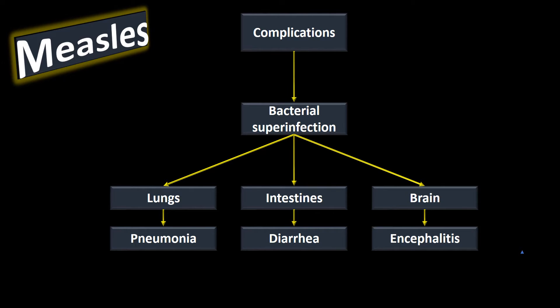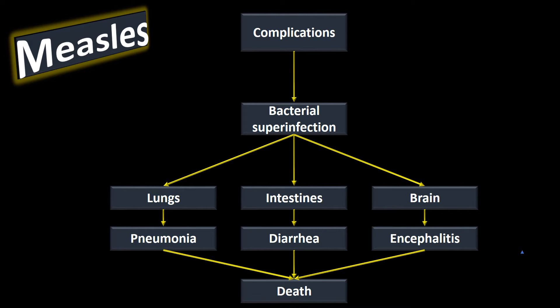These complications can all lead to death. In the 1990s the death rate was about two to three per 1,000 cases, mainly in children under five. In developing countries, the case fatality rate can be three to five percent, and sometimes as high as ten to thirty percent, especially without medical resources for supportive therapy. The main causes of death are complications from pneumonia or from encephalitis.